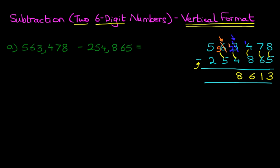Twelve minus four — the answer is eight. On to the ten-thousands: we've got five minus five — five minus five is zero. And lastly we have the hundred-thousands: five minus two is three. And that is our answer: three hundred and eight thousand six hundred and thirteen.